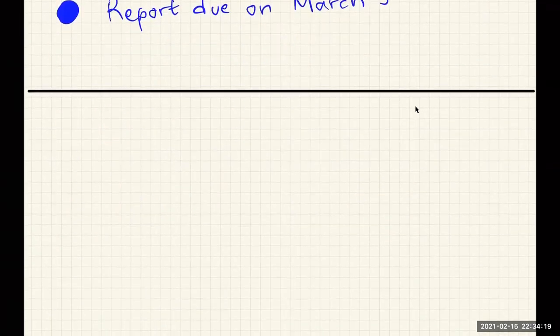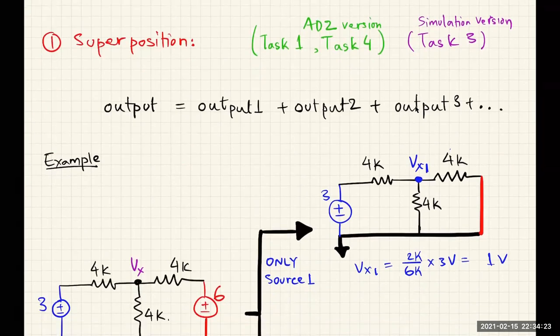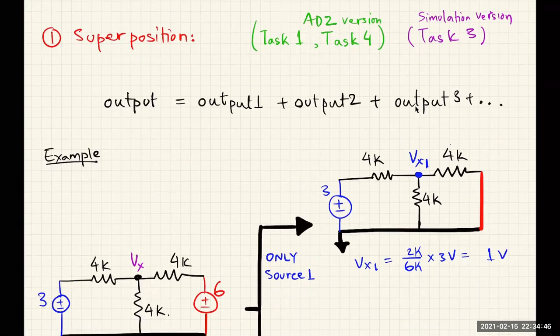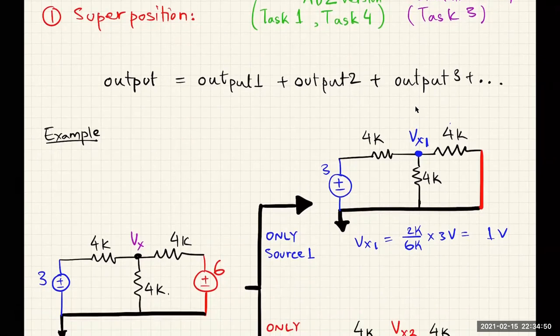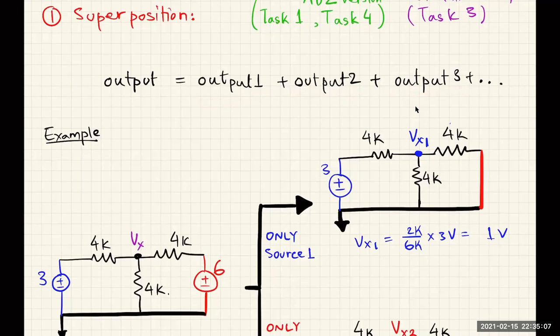Let's start by talking about superposition. The idea of superposition is that for linear circuits, we can break up the circuit so that we only look at one of the sources at a time and combine the outputs of the individual sources to get the overall output of the entire circuit. If we get one output using one source, another using a second source, and a third using a third source, the combined effect is simply a linear combination of the individual outputs.